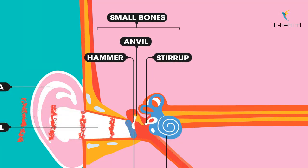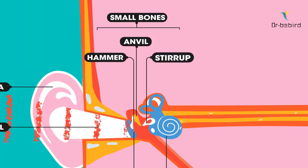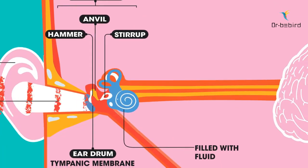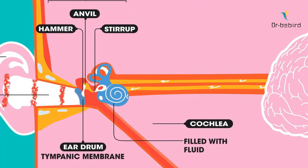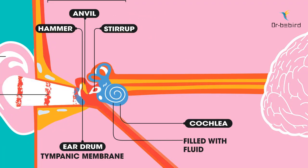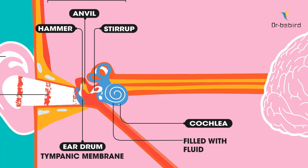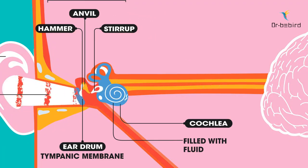The last bone, the stirrup, is connected to another membrane which covers the entrance to the cochlea. The vibrations pass through to the fluid inside the cochlea.